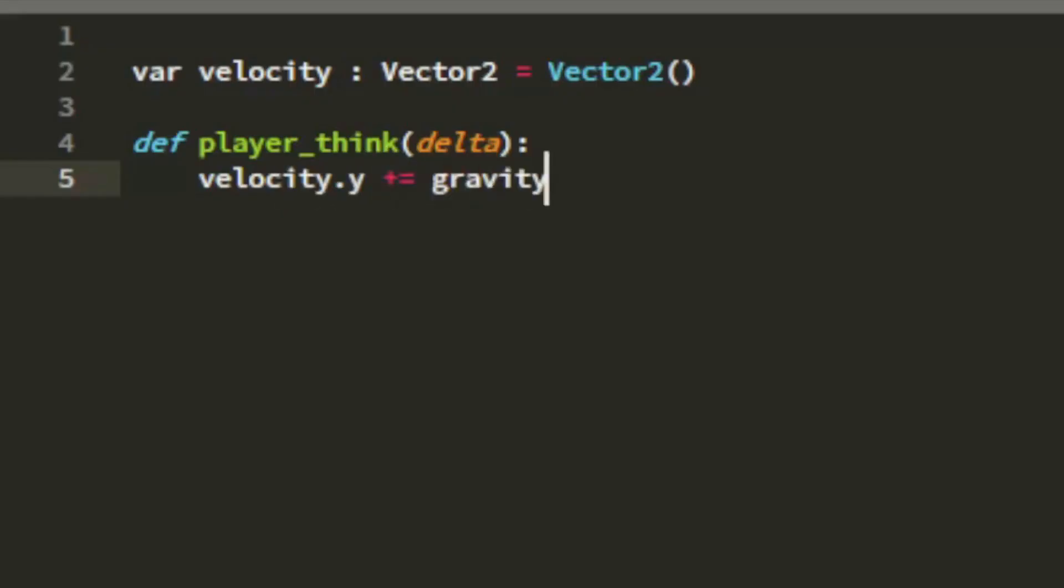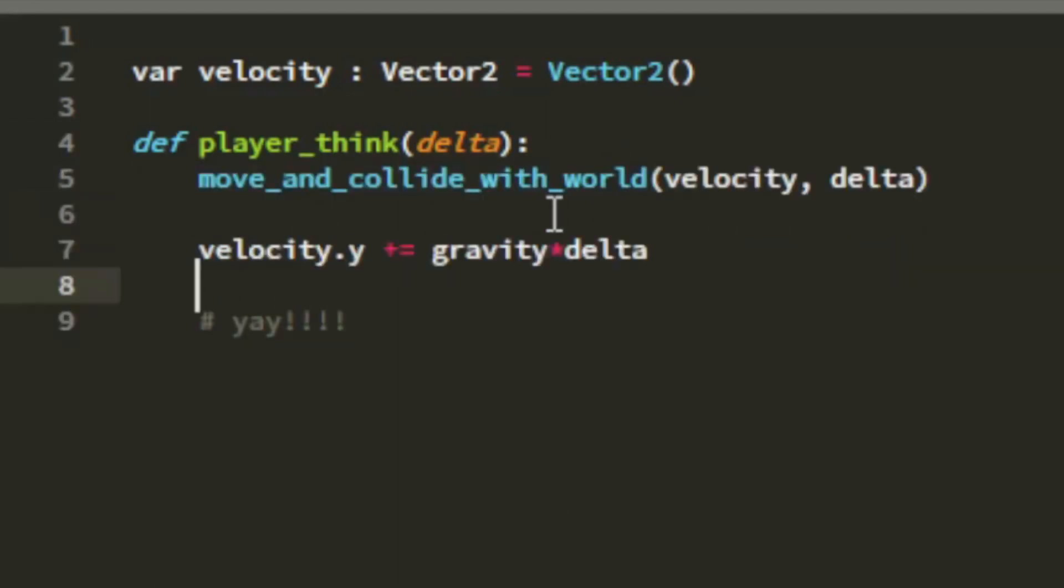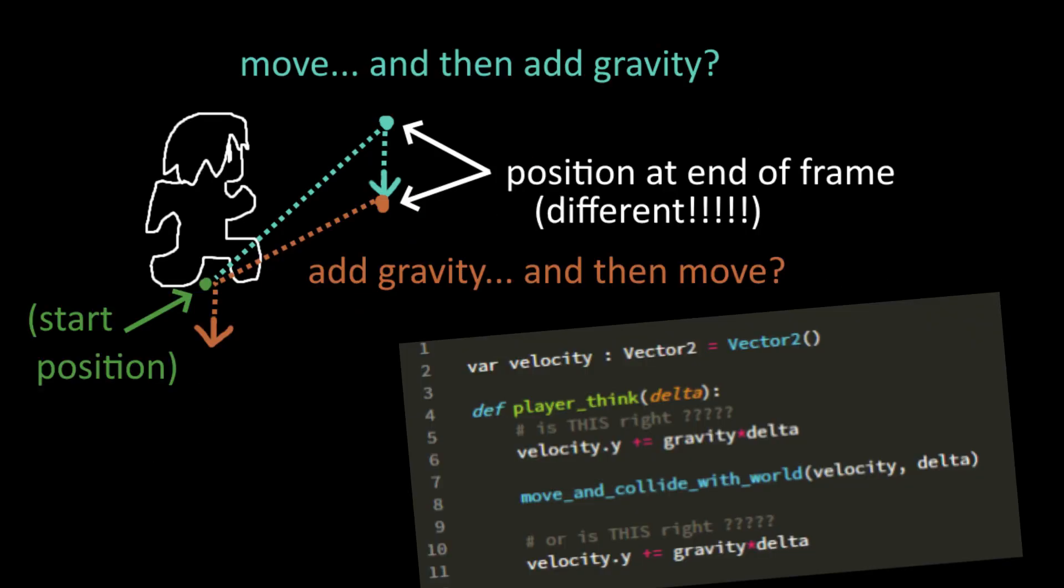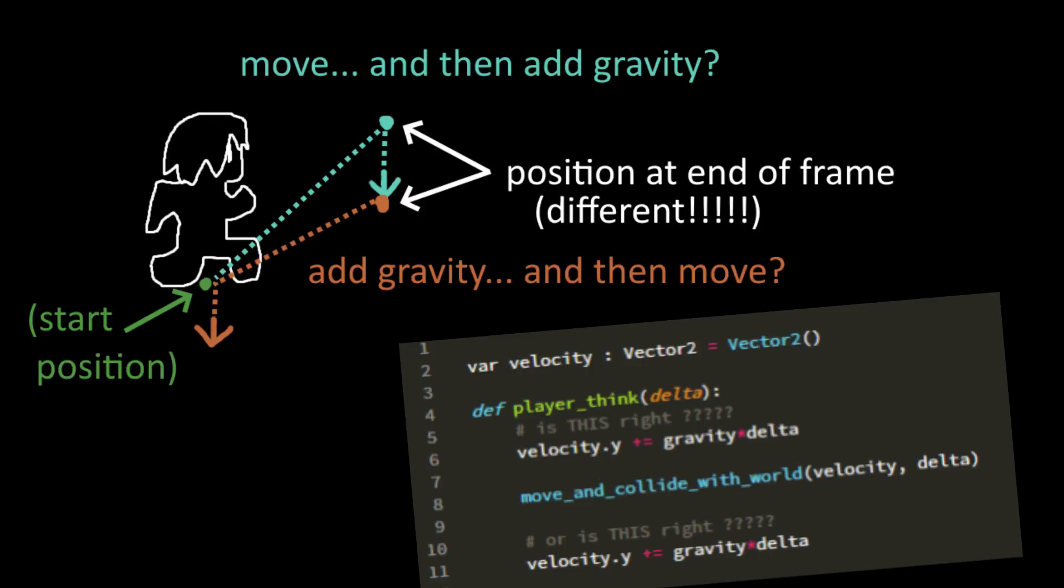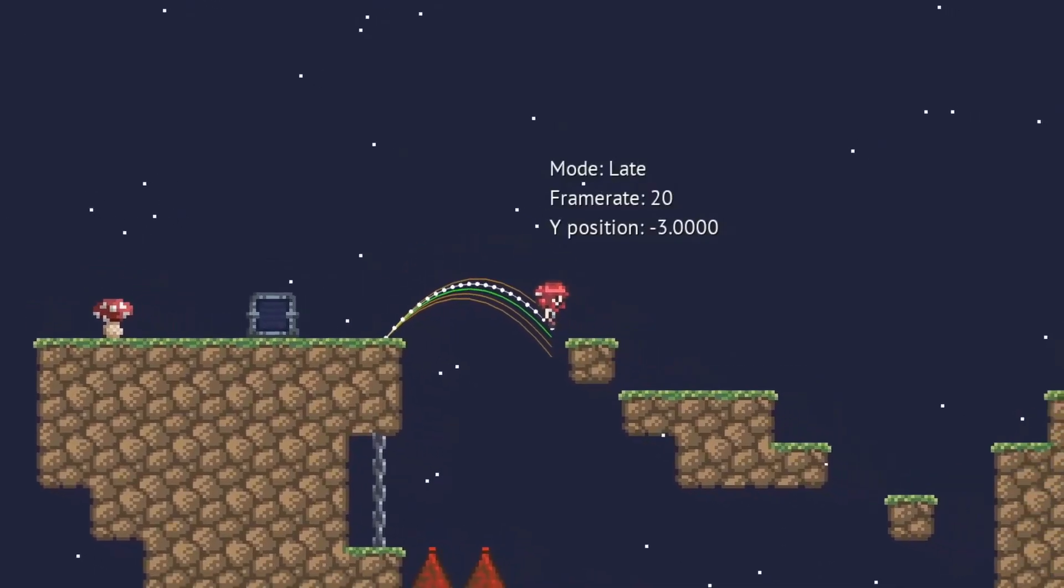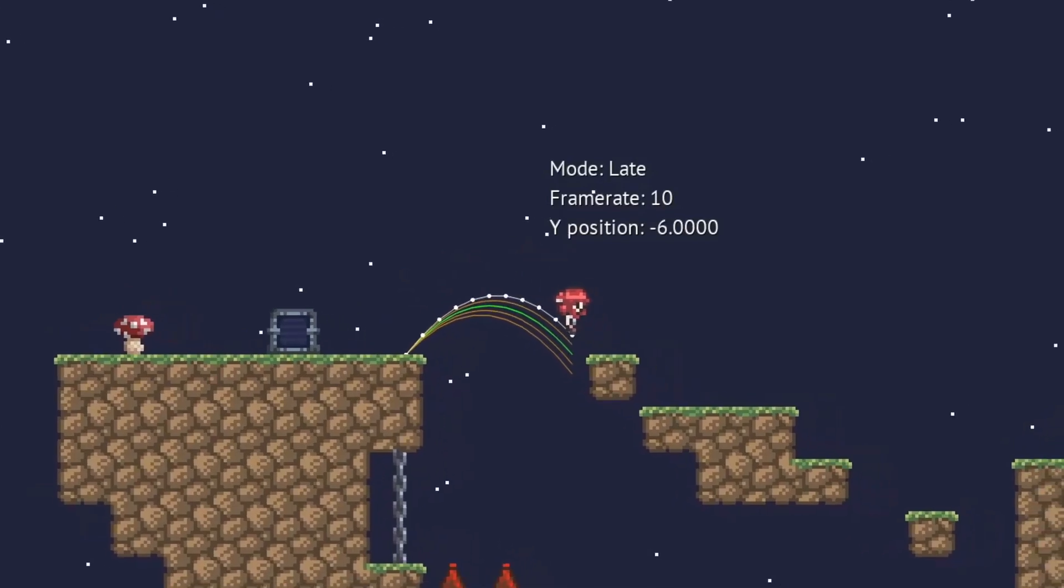The jump arc changes. So the problem is, when you add gravity, you'd think that you can just add it before or after moving and everything would be fine, right? But if you think through it, these pieces of code do slightly different things. The one where you add gravity later is going to have a higher jump arc because it's skipping around the upper side of the arc.